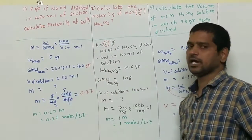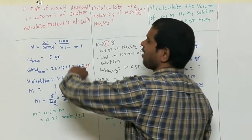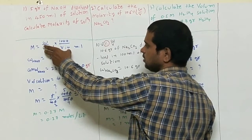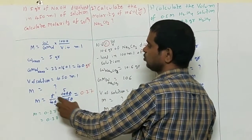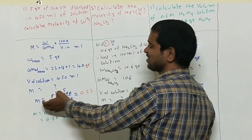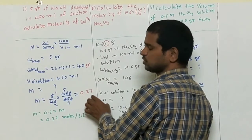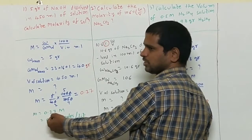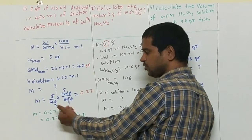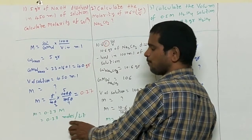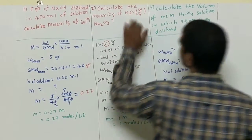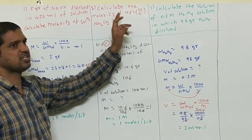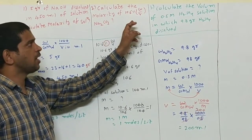I put a question mark here and I am substituting all these values in the formula: 5 divided by 40, multiplied by 1000 divided by 450. After simplification we get 0.27 as the answer. M equals 0.27 M, or the units are 0.27 moles per liter. Now see the second question: calculate the molarity of 10.6 percent weight by volume Na₂CO₃.